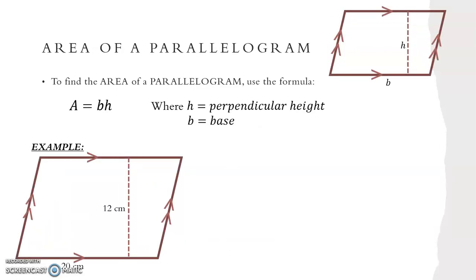To find the area of a parallelogram we use the formula A equals BH, where H is the perpendicular height and B is the base length. We write out our formula A equals BH and substitute in our values: our base is 20 and our height is 12. So A equals 20 times 12. We put that into our calculator to get A equals 240 centimetres squared.